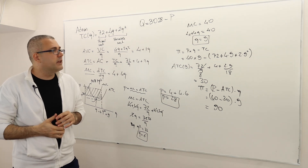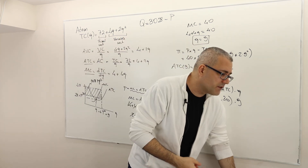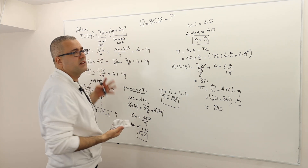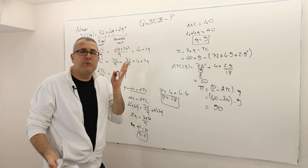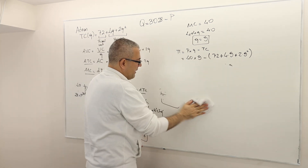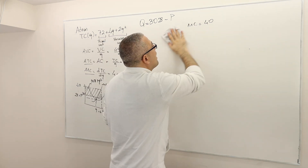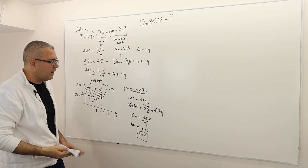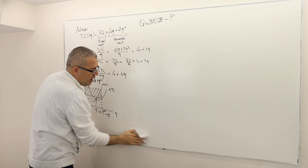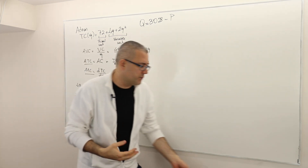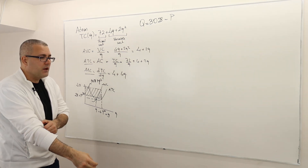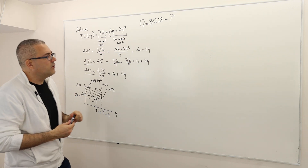We make the simplifying assumption that all suppliers have exactly the same cost function. If some had higher or lower cost functions, the problem would be more complicated. Assuming identical cost structures, we want the total number of firms operating in this market in the long run.